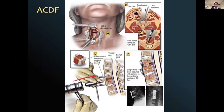The anterior cervical discectomy and fusion is the workhorse of most modern cervical spine surgery. The patient is placed under general anesthetic, a small incision is made in the front of the neck either along the skin crease or the sternocleidomastoid muscle. Dissection is carried out between the esophagus and trachea on one side and the carotid artery and jugular vein on the other. Once at the front of the spine, we remove the affected discs and sometimes the entire vertebral body.